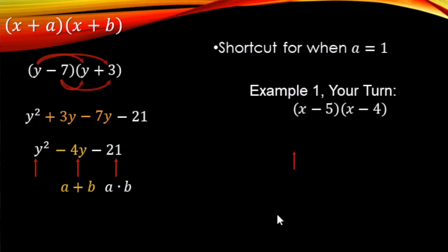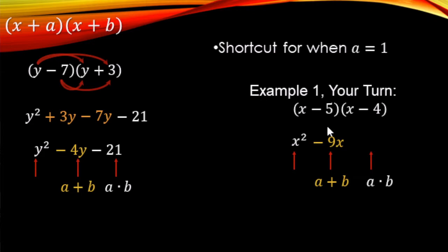So our firsts: that's going to be x times x, x squared. Now the middle term — that's going to be the negative 5 and the negative 4 being added, which makes negative 9x. And then for the last term of the trinomial, you just take those same two numbers and multiply them together: negative 5 times negative 4 makes positive 20.